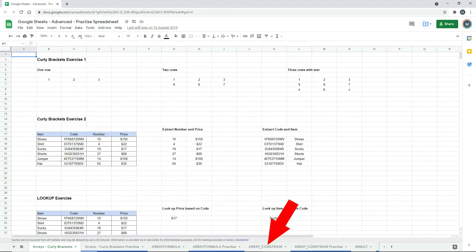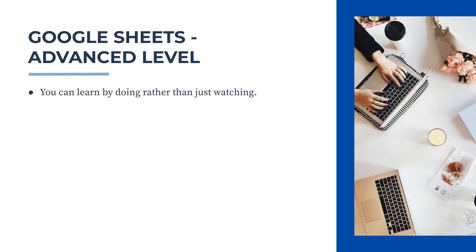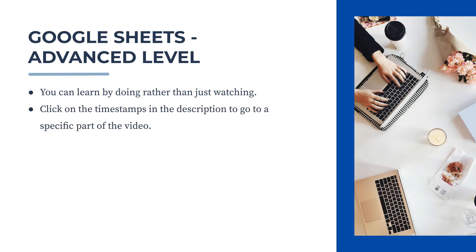The way this works is that for each lesson, I will do a demonstration on a worksheet that does not have the blue line at the bottom, while you can practice the teachings on the corresponding tab that does have a blue line at the bottom. That way, you can learn by doing rather than just watching. If you want to go straight to any specific part of this video, just click on the timestamps in the description below. OK, that's it for the intro — let's get started on the lessons.